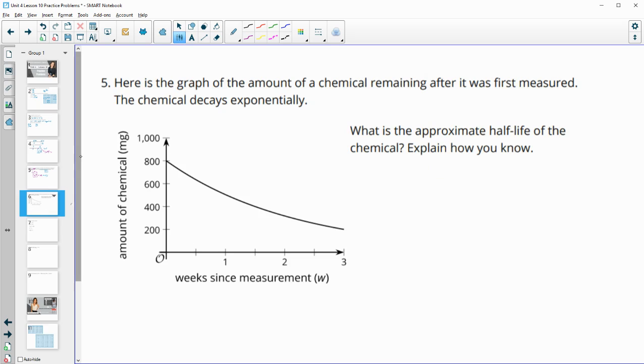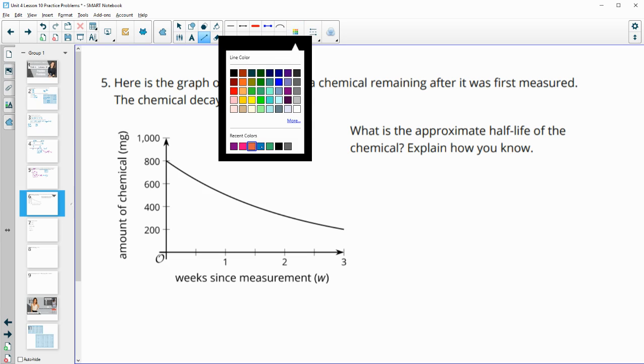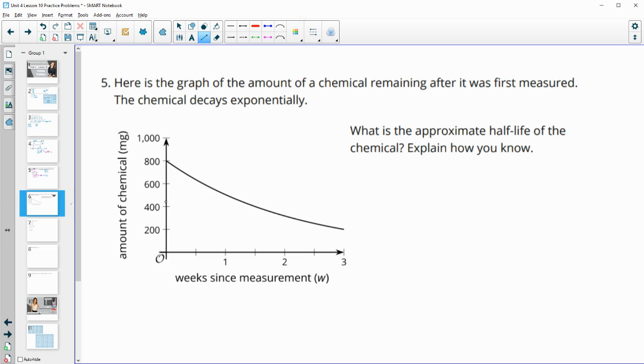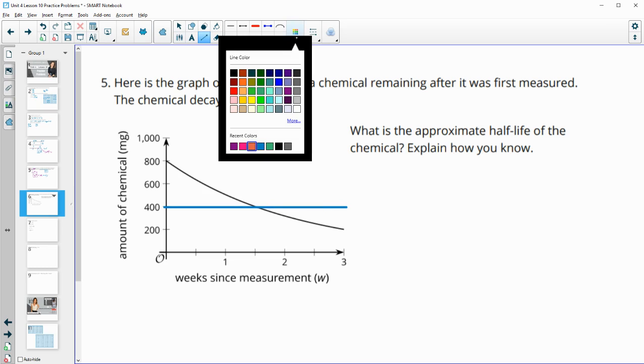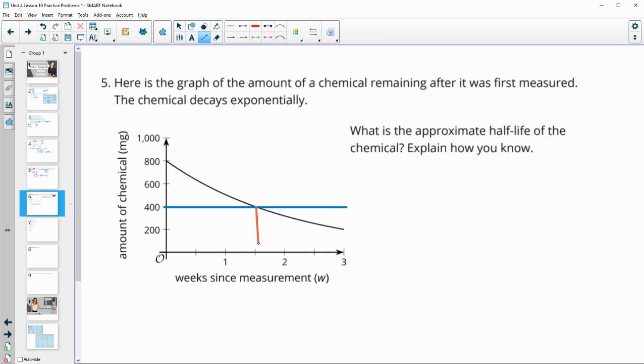Number five, here's the graph of the amount of chemical remaining after it was first measured. And the chemical is decaying exponentially. What is the approximate half-life of this chemical? So let's take a look at the initial value is 800. So the half-life is going to be when this chemical reaches 400. So I'm just going to draw the line of 400 across so we can see where it crosses the graph. So here's where the graph equals 400. So then if we go straight down here, we see that this is happening after 1 1/2 weeks. So about 1.5 weeks.